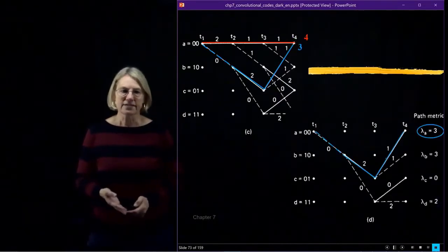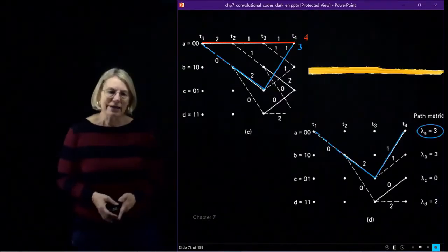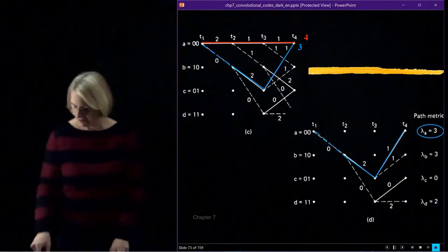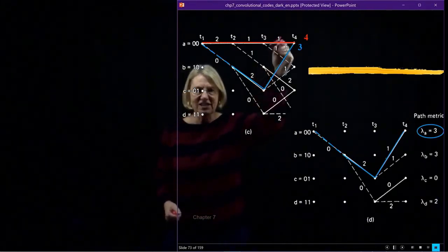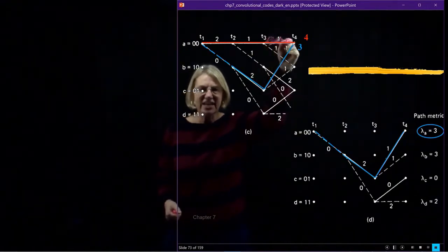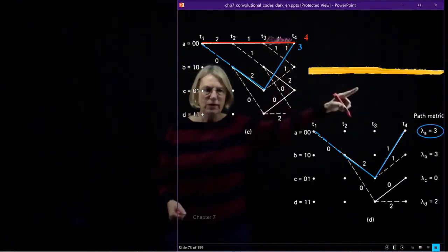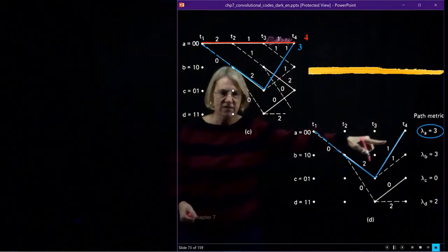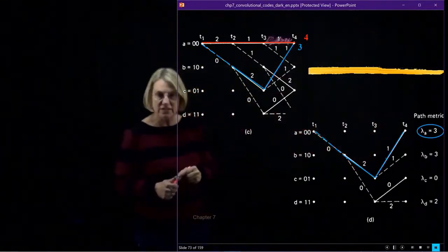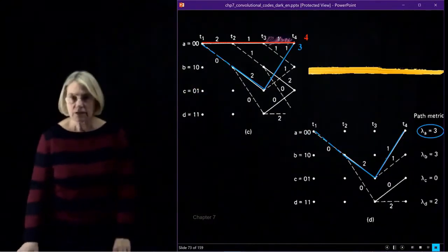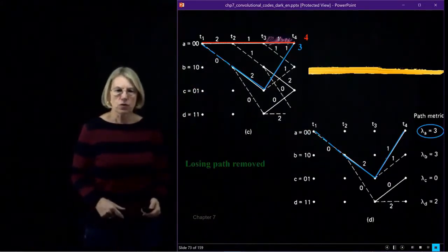I say 3 is smaller. So I prune my path. What I mean by prune my path is this part of the transition I get rid of entirely. It's like it didn't exist. So when I look here at my survive path, there's just one that I keep. The other ones I get rid of.